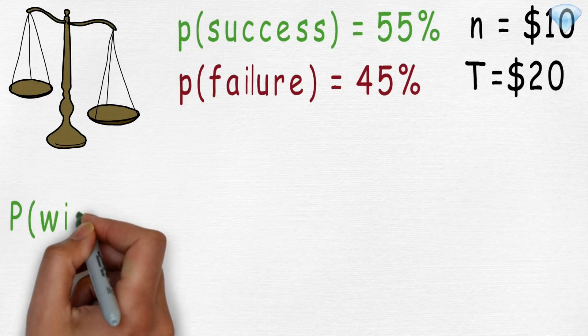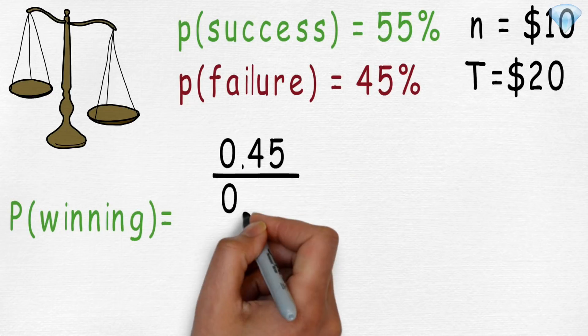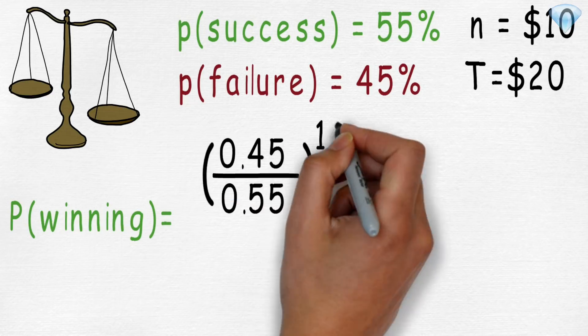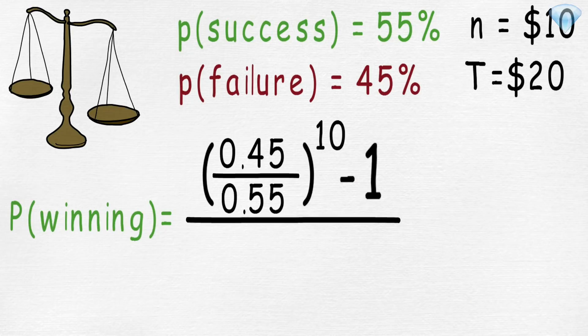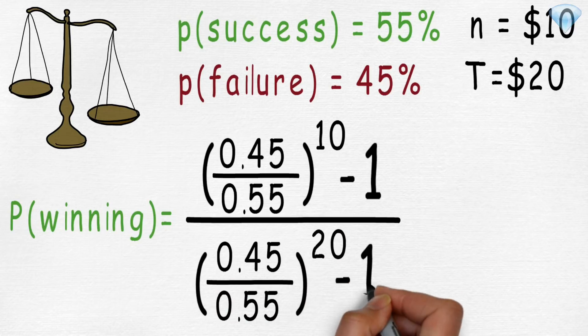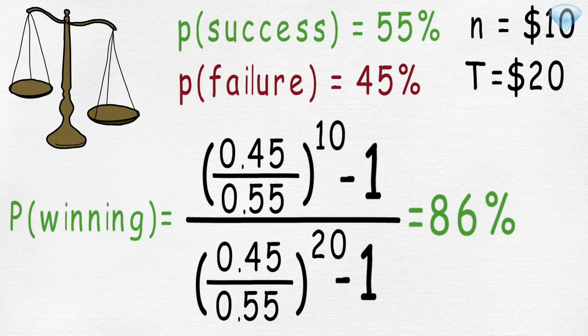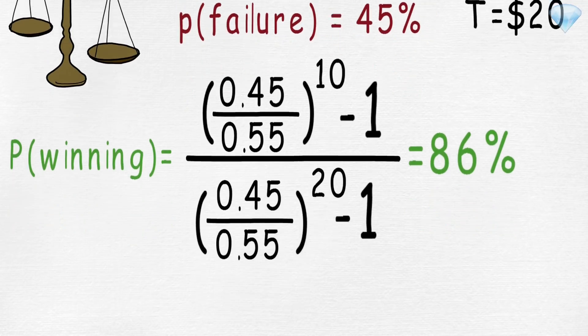In this case, the probability of winning is 0.45 divided by 0.55 to the power 10 minus 1, everything divided by 0.45 divided by 0.55 to the power 20 minus 1, which is equivalent to 0.86 or 86%. So we can double our money with 86% chance of success if we tilt the odds on our side.